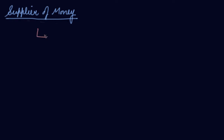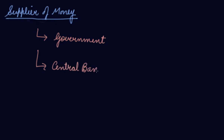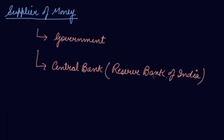In this video we will be studying about the suppliers of money — who supplies money in the economy. There are three parties involved with the supply of money: number one is the government, number two is the central bank, that is the apex bank, the Reserve Bank of India, and third are the commercial banks.